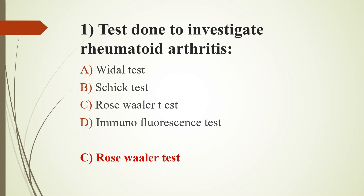Rosewaller test is a slide hemagglutination method for the detection of rheumatoid factor in human serum. People with rheumatoid arthritis often have an elevated ESR and also elevated CRP level.